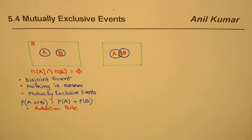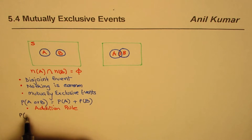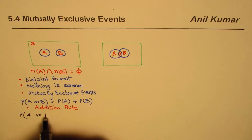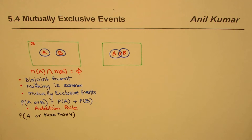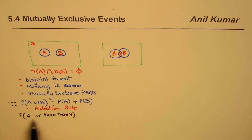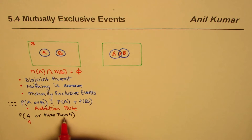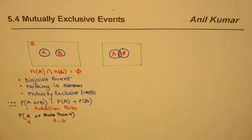Let's take up an example. We throw a dice and get just one number. We are looking for the probability of getting four or more than four. The way the question is framed, there is nothing in common. We have numbers one to six, so four is one element and more than four means five and six.